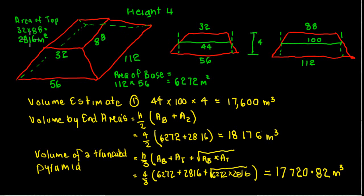And I've just done, just to make things a little bit easier for our calculations, area of the top 32 by 88 is 2,816 meters squared. Area of the base 112 by 56 is 6,272 meters squared.